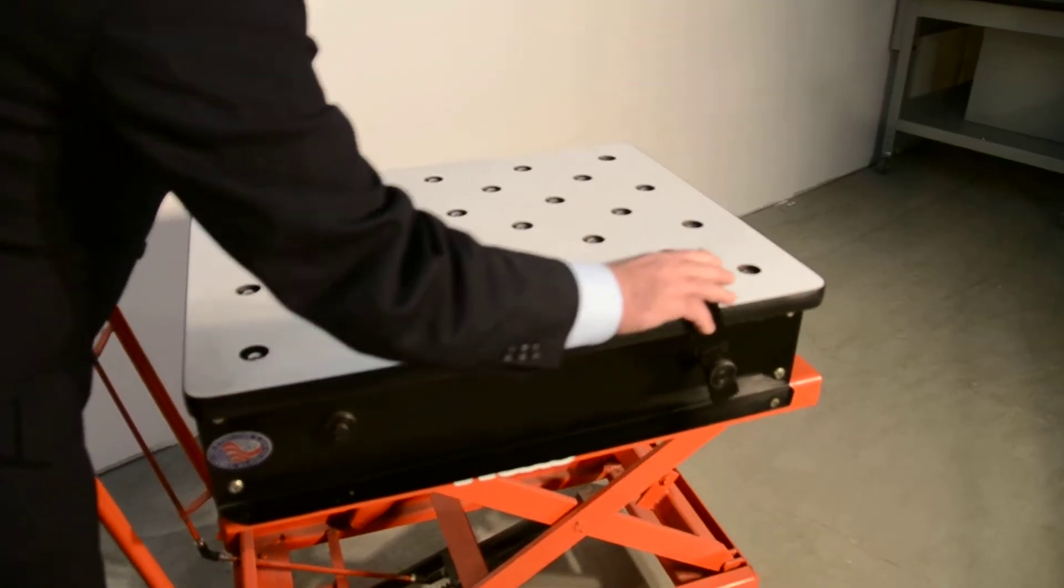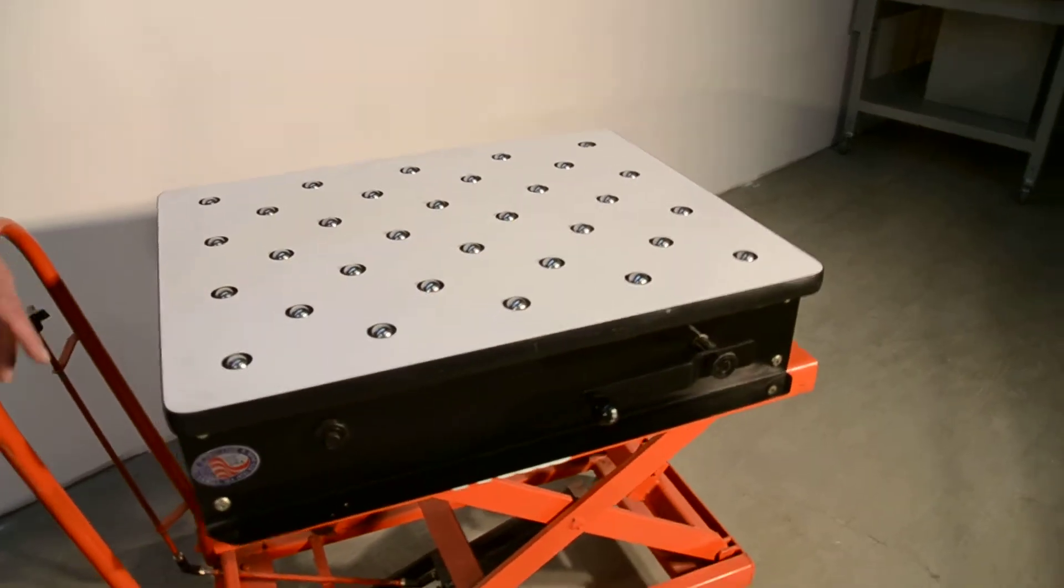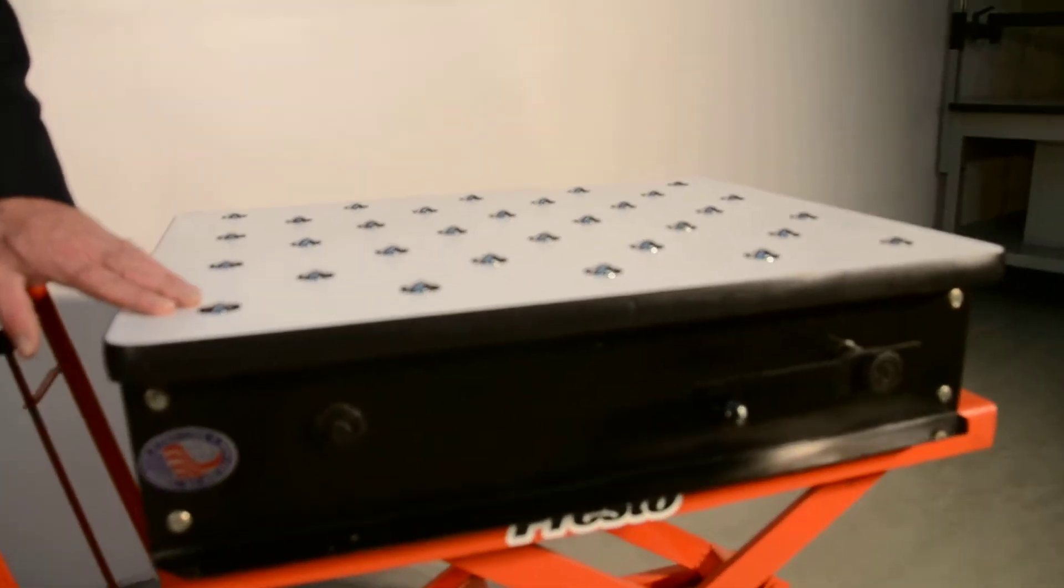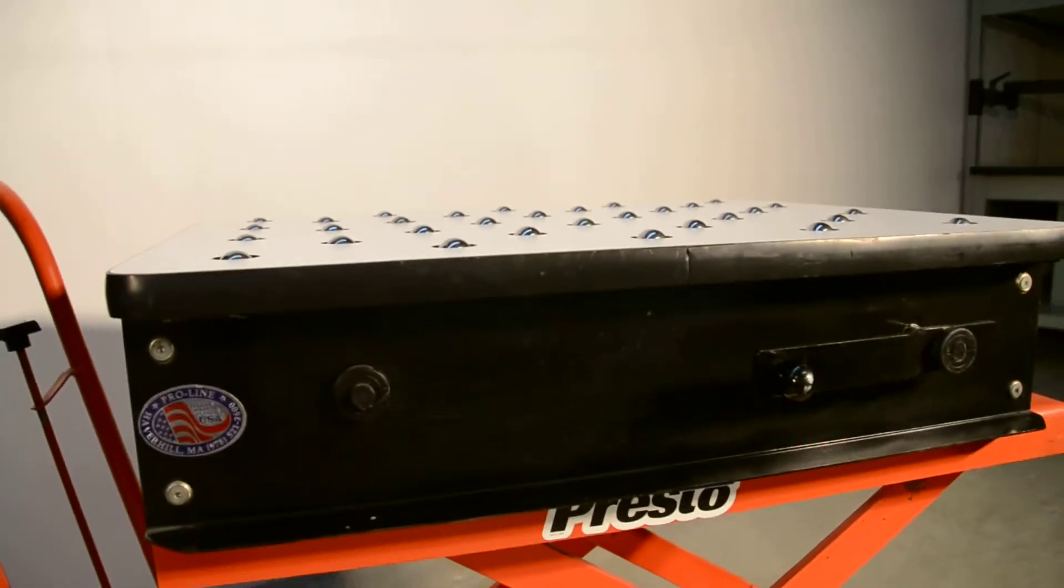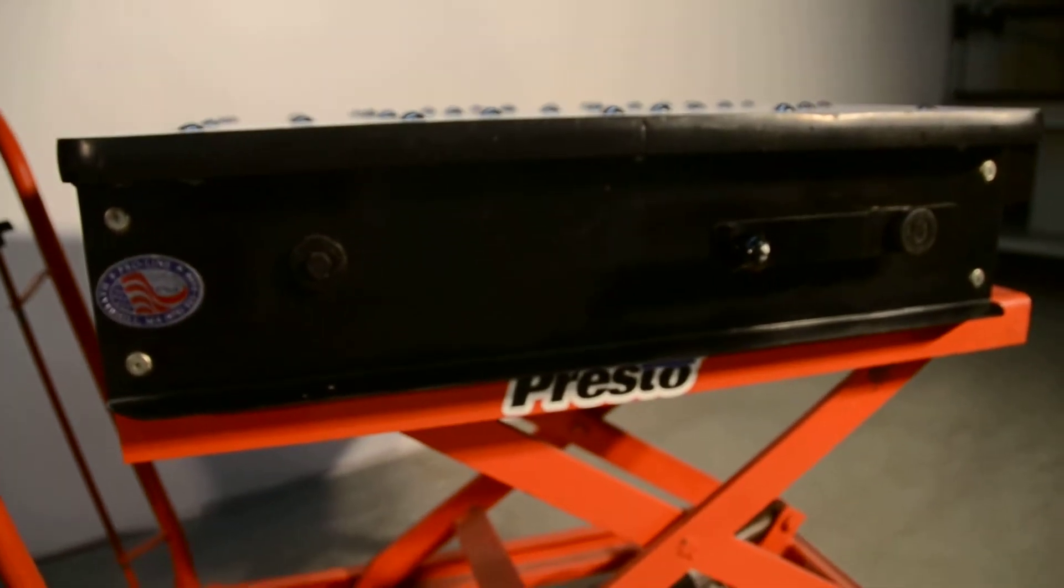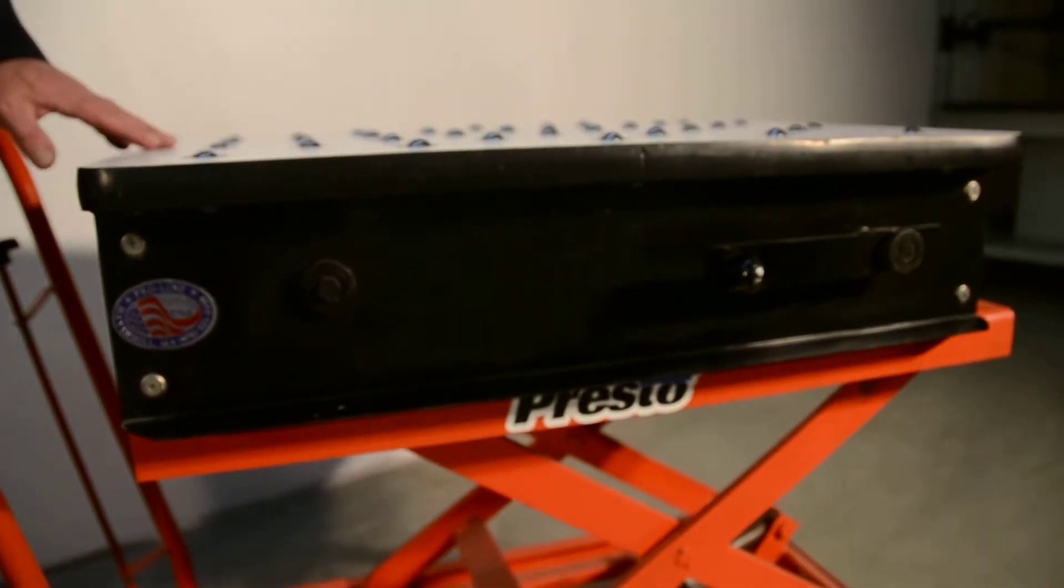This works by pushing the lever down. Once you do that, the ball transfers are raised a quarter inch above the work surface. It takes 25 pounds of pressure on the handle to lift 500 pounds.